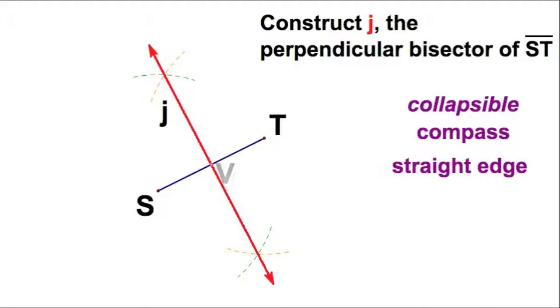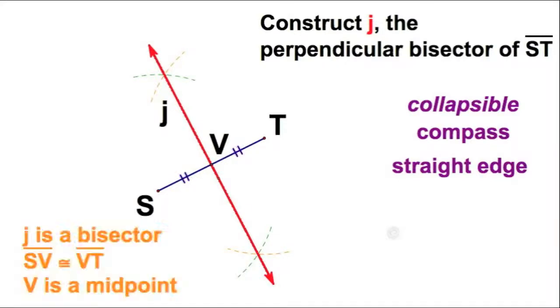I'm going to put in something else here. I'll show the midpoint V. I'll just call this point right here V. And if this is indeed a perpendicular bisector, remember that two-part definition. That means V bisects the segment ST. But it also means V is a midpoint of ST. And we've got the tick marks here to show that.